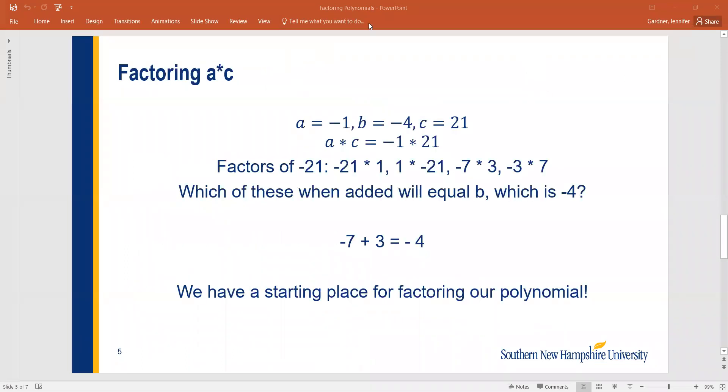So we found that B, which was negative 4, is the same as negative 7 plus 3. We have to remember that. This is the starting place for factoring our polynomial. And I listed out the steps here in case you need to review them. You can pause this and review the steps we just did here and see that we listed all the factors, and then we found that negative 7 plus 3 is the one that equals negative 4. This is our starting place for factoring the polynomial. We're going to replace our B with our new numbers.